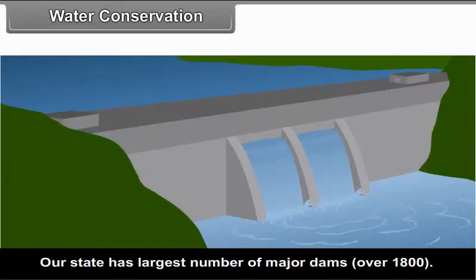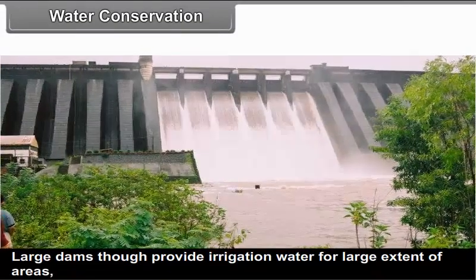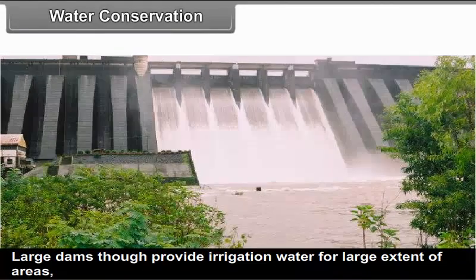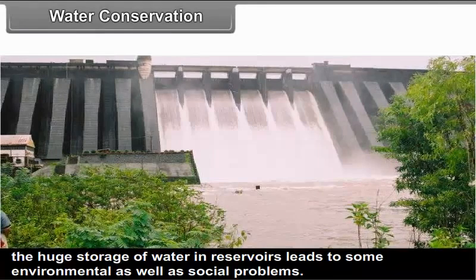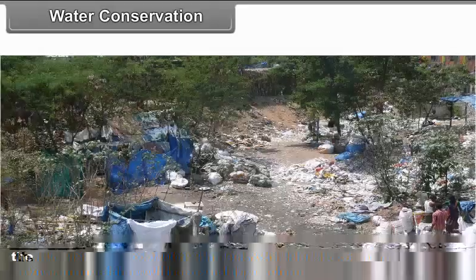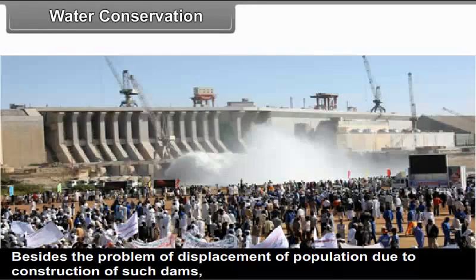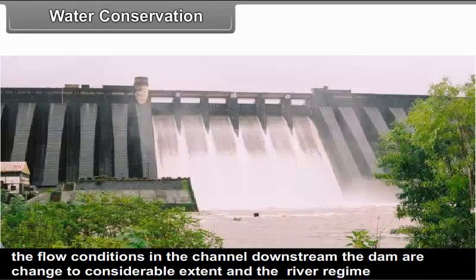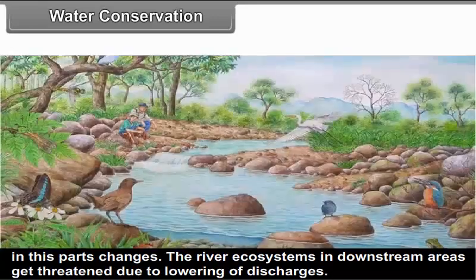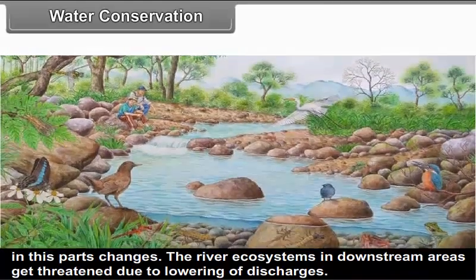Our state has the largest number of major dams — over 1,800. Large dams, though they provide irrigation water for large extents of areas, the huge storage of water in reservoirs leads to some environmental as well as social problems. Besides the problem of displacement of population due to the construction of such dams, the flow conditions in the channel downstream of the dam change to a considerable extent and the river regime changes. The river ecosystems in downstream areas get threatened due to lowering of discharges.